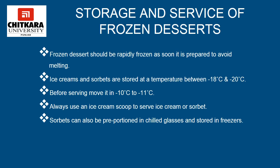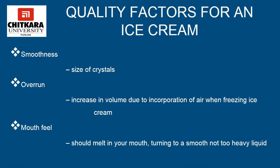Frozen desserts should be rapidly frozen as soon as they are prepared to avoid melting. Ice creams and sorbets are stored at a temperature between minus 18 degrees Celsius and minus 20 degrees Celsius. Before serving, move them to minus 10 to minus 11 degrees Celsius. Always use an ice cream scoop to serve ice cream or sorbet. Sorbets can also be pre-portioned in chilled glasses and stored in freezers. Quality factors for ice cream include smoothness (size of crystals), overrun (volume increase due to air incorporation), and mouthfeel — it should melt in your mouth turning to a smooth, not too heavy liquid.